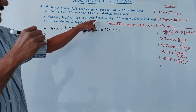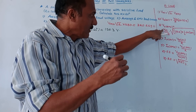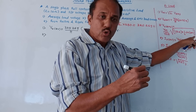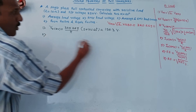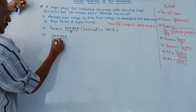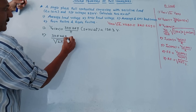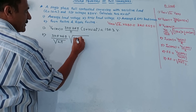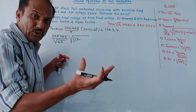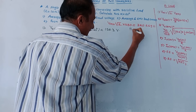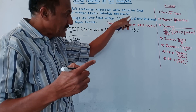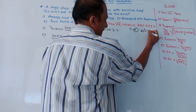Second calculation: we have to calculate RMS load voltage. We have formula number 3, which is Vm/(√2 · π) × √(π − α + ½ sin 2α). So it is Vm/(√2 · π) = 325.269/(√2 · π). Then under the square root: π minus alpha. Very importantly, whenever the term is π − α, the value of alpha must be put in terms of π. Given alpha is 60 degrees, which equals π/3 radians.